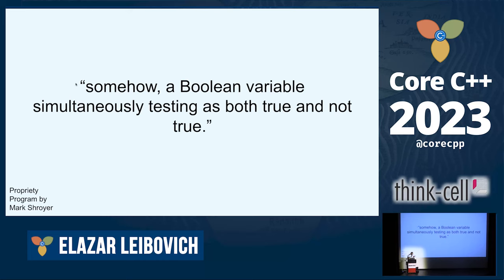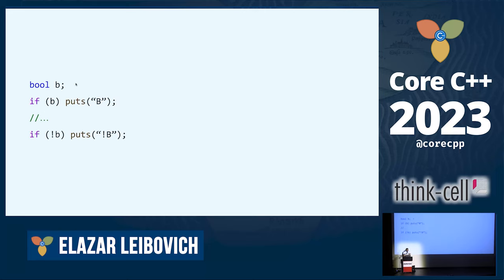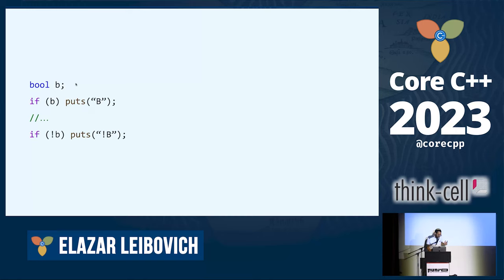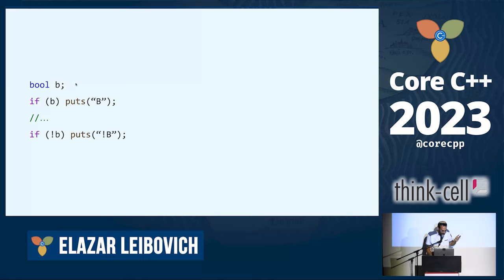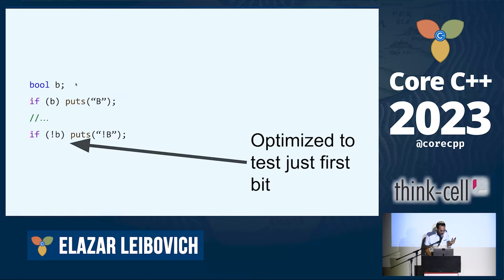Another blog post describes a real-world bug where a boolean variable simultaneously tested as both true and not true. The undefined behavior is not hard to find: `b` is uninitialized and you cannot use it. The programmer had this embedded in a much larger code where either `b` or `not b` would be printed. What actually happened is that the first test was translated to a non-zero test, and the second one tested the first bit because the compiler already had it in a register — so the conditions weren't symmetrical and both branches executed.